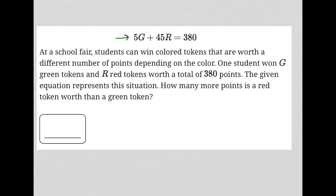So this question starts off by telling us that 5G plus 45R equals 380. We have no idea what that means yet, so let's read the question. It says, at a school fair, students can win colored tokens that are worth a different number of points depending on the color.